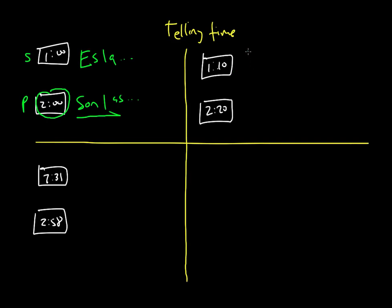Now let's take a look at these two digital clocks. If you want to include minutes in your time, we're going to use the phrase 'y,' which means 'and.' So 1:10 we would say 'es la una y diez.'